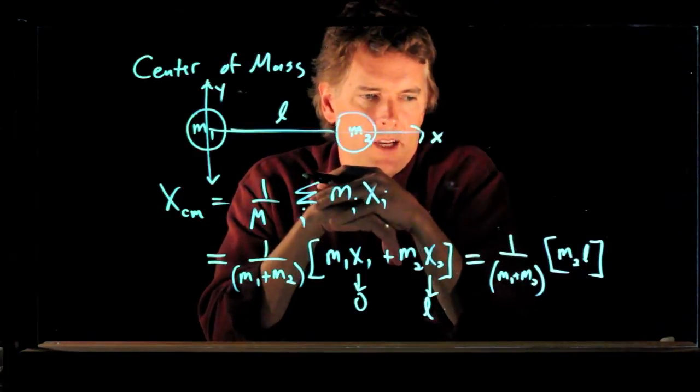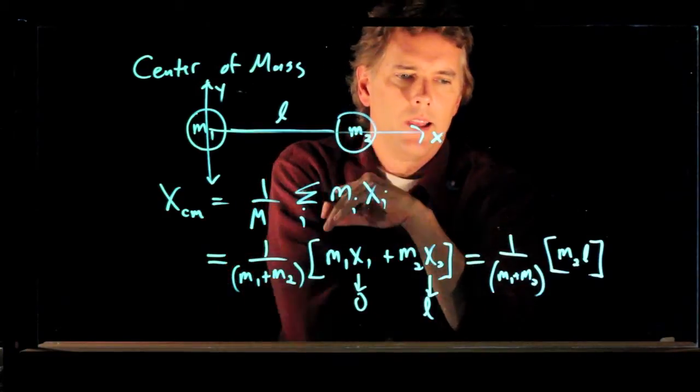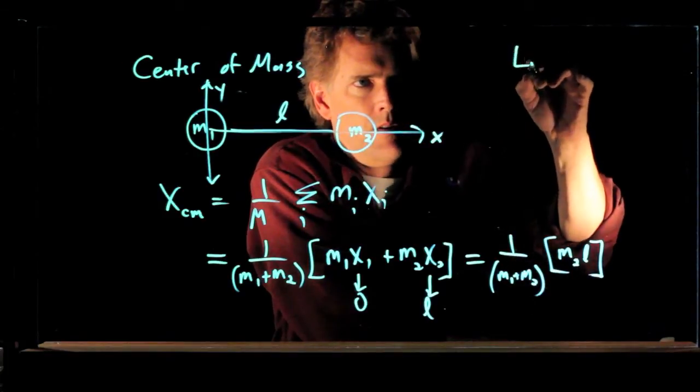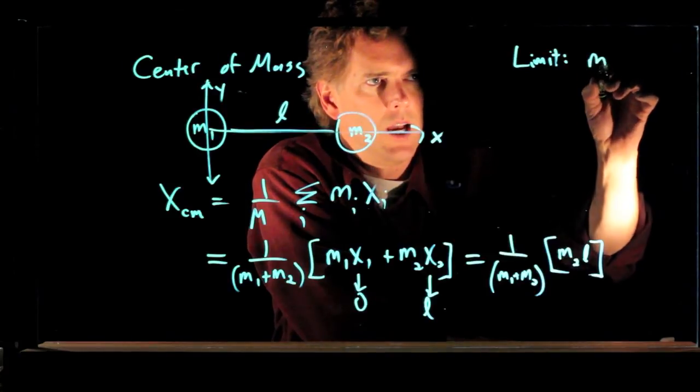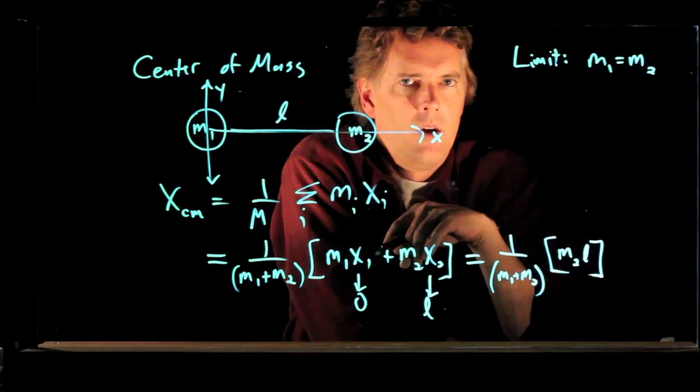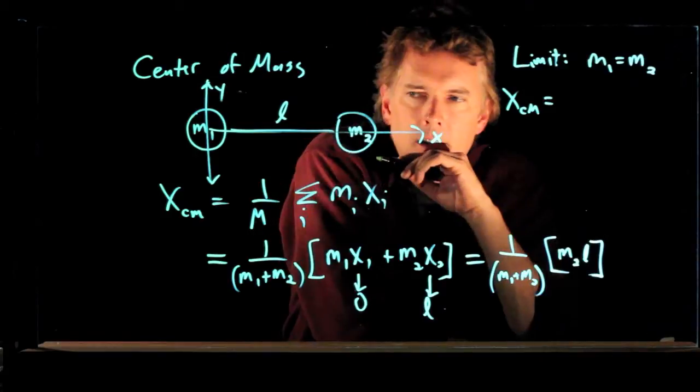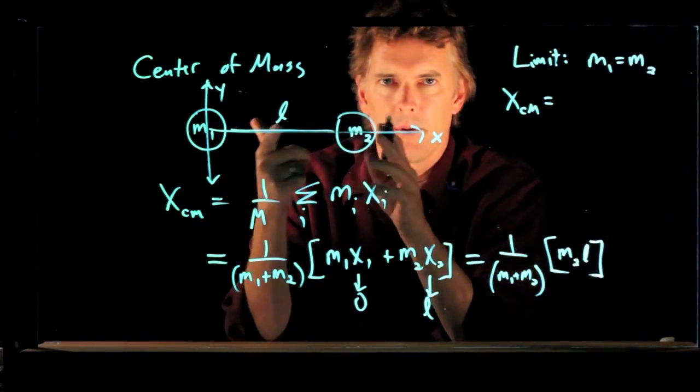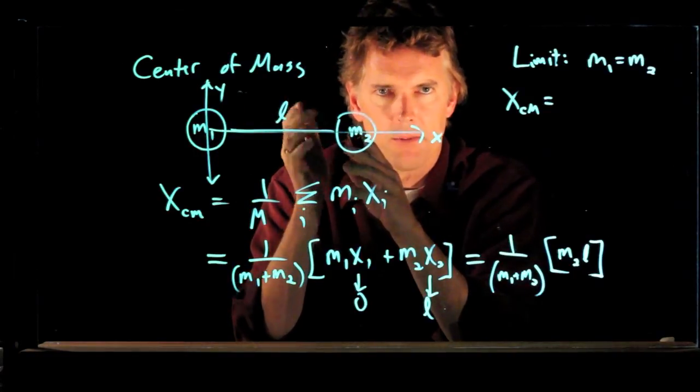Now, that seems like a perfectly reasonable answer, but let's take a look at the limits and see if it makes sense. Let's look at one limit in particular. Let's say that the two masses are equal. So this is a regular dumbbell, like you might find at the gym. Where is the x center of mass? Well, if the two masses are equal, then the problem is symmetric, and so the center of mass has to be halfway through, right? It has to be right down the middle.